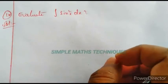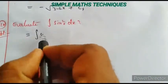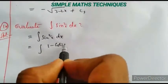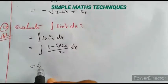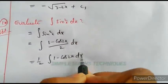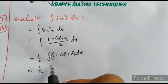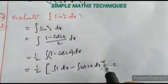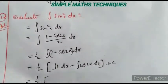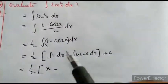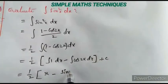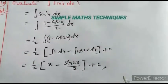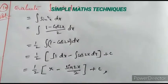Evaluate integration of sin²(x) dx. Using the identity sin²(x) = (1 - cos 2x)/2: 1/2 · integration of (1 - cos 2x) dx = 1/2 · (x - sin 2x/2) plus c. This is the solution.